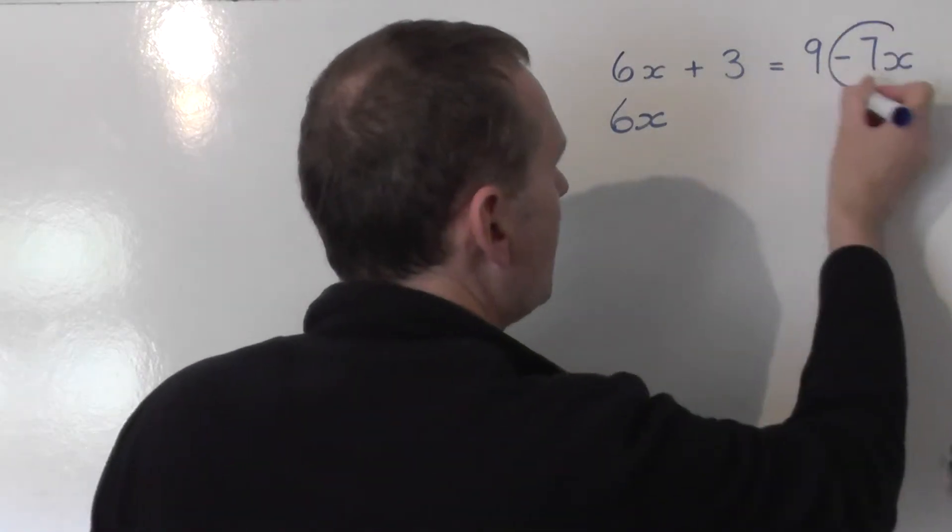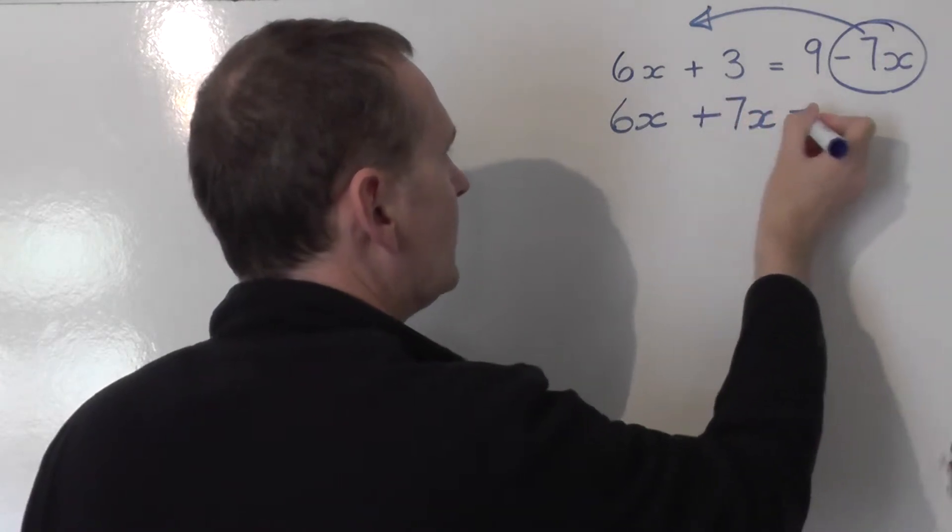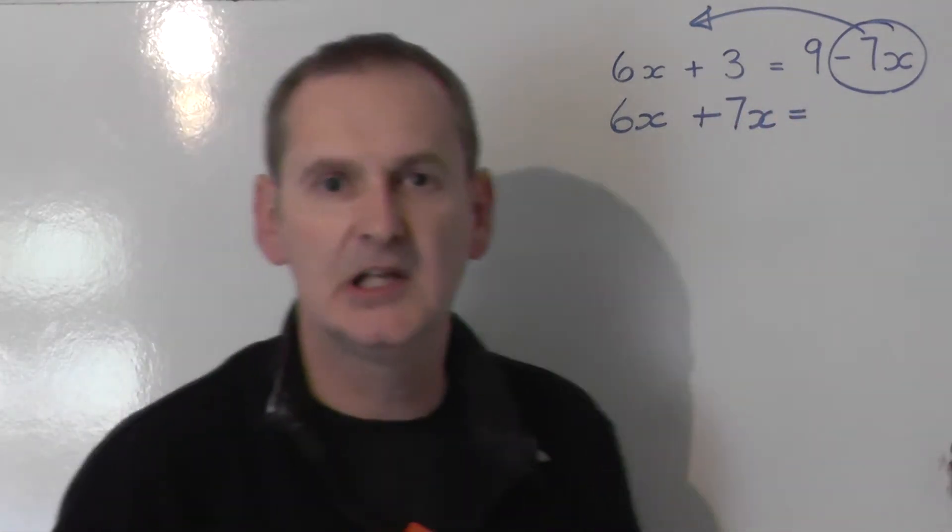I'm going to take that minus 7x to join it on the left-hand side. It swaps signs, so it becomes plus 7x on the left-hand side.